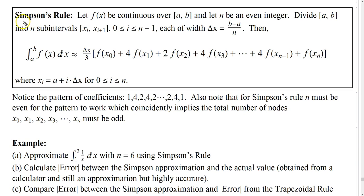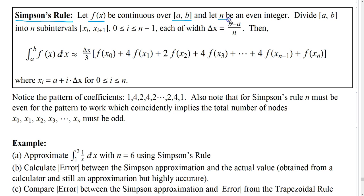In this lesson, we're going to go over Simpson's rule for approximating definite integrals, and we're going to compare it to the trapezoidal rule. Simpson's rule states that we start with a function f of x which is continuous over a closed interval a, b, and we let n be an even integer.